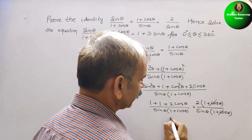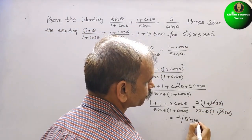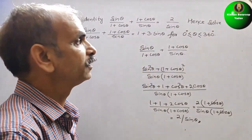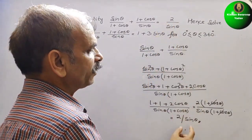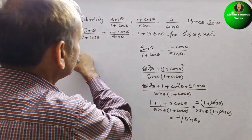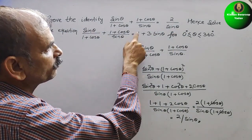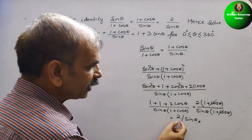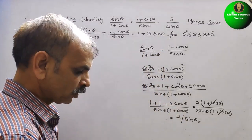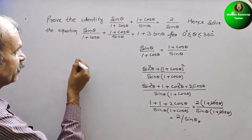The (1 + cosθ) terms cancel, and we get 2/sinθ. So we have proved the identity — the result is 2/sinθ as required. Now for the next part, we solve the equation, which has the same left-hand side, so we already know it equals 2/sinθ.